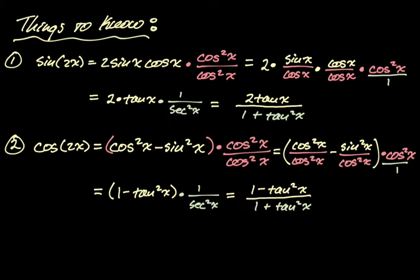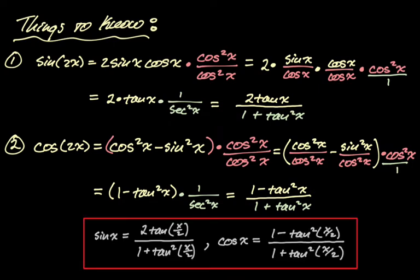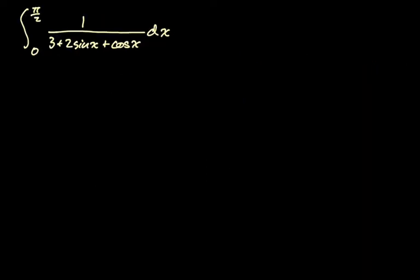We're trying to integrate something with a sum of sine and cosine in the denominator, and this technique will work. But we only have sine and cosine, not sine of 2x and cosine of 2x. So in each of these formulas, replace every x with x over 2. That gives us: sine of x is 2 tan of x over 2 over 1 plus tan squared of x over 2, and cosine of x is 1 minus tan squared of x over 2 over 1 plus tan squared of x over 2. I'll be honest — I frequently forget to use x over 2 in the denominator and flounder around for a long time. Keep those in mind as we go back to our original integral.